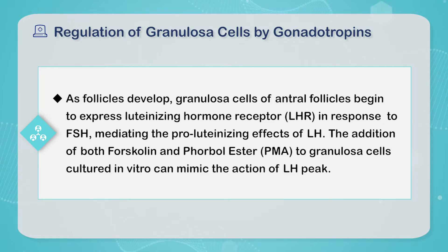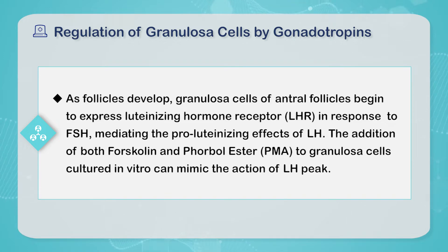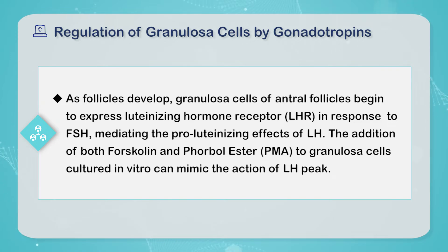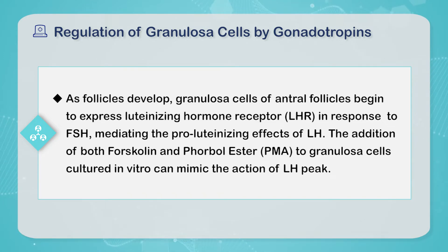In addition, as follicles develop, granule cells of antral follicles begin to express luteinizing hormone receptor, LHR, in response to FSH, mediating the pro-luteinizing effects of LH. The addition of both forskolin and phorbol ester to granule cells captured in vitro can mimic the action of the LH peak.